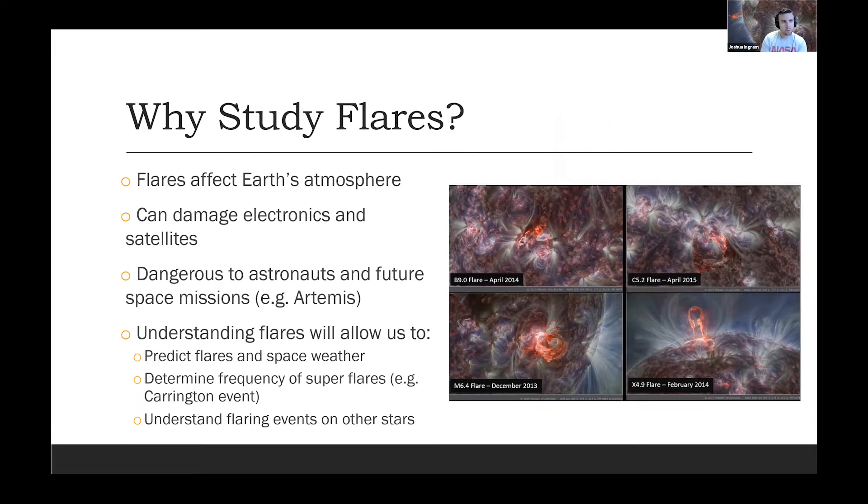Why should we bother studying solar flares? They can affect Earth's atmosphere. That's actually what causes the Aurora. They can also damage electronics and satellites and they're dangerous to astronauts in future space missions, such as the Artemis program trying to set up a lunar base or things like the James Webb space telescope. They also affect radio waves so they can affect communications. There are a lot of reasons that we should study these things. By understanding flares both physically and with statistical models, we're able to predict them eventually. We can predict space weather like we do with weather here on Earth. We can also determine the frequency of super flares like the Carrington event that occurred in the 1880s. It's important to understand flaring events here on our sun because we can extrapolate these results to other stars because flares also go off there as well.